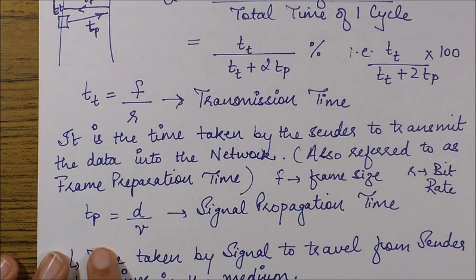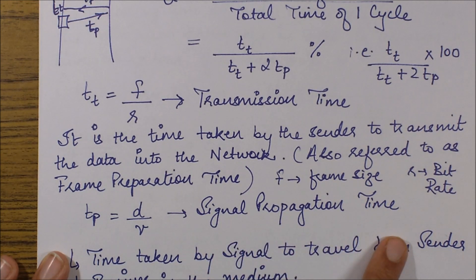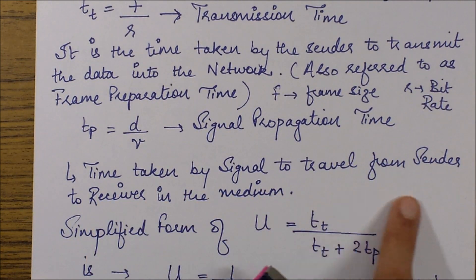Then tp is the propagation delay, where tp equals distance divided by speed. It's the signal propagation time, the time taken by the signal to travel from the sender to the receiver in the medium.